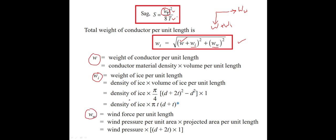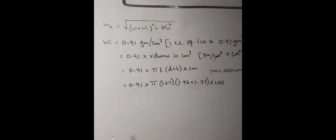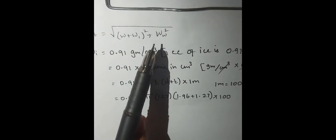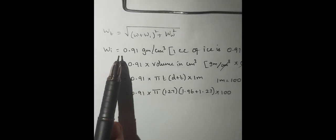Density of ice is given. Using the volume formula, Wi = 0.91 × π × t × (d + t) × 1 meter. The formula for wind force per unit length is: Ww = wind pressure × (d + 2t) × 1. In both cases, the length of 1 meter is substituted. The weight of ice is 0.91 gram per centimeter cube, and we must substitute the volume in centimeter cubes.